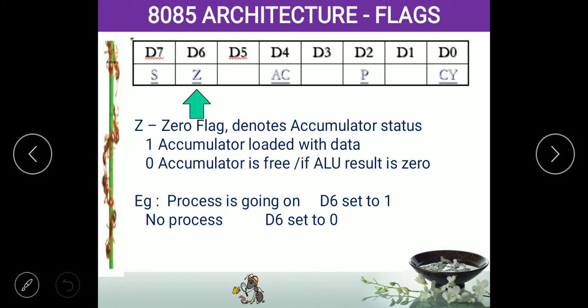The zero flag is used to indicate whether the processor is free. If the keyboard wants to know whether the processor is free or not, it is not necessary to ask the processor directly — it just checks the D6 pin. If the value at D6 is 1, the processor is busy. If the value is 0, the processor is free. Similarly, a printer or any other peripheral only needs to check the D6 pin — it does not need to ask the processor every time.